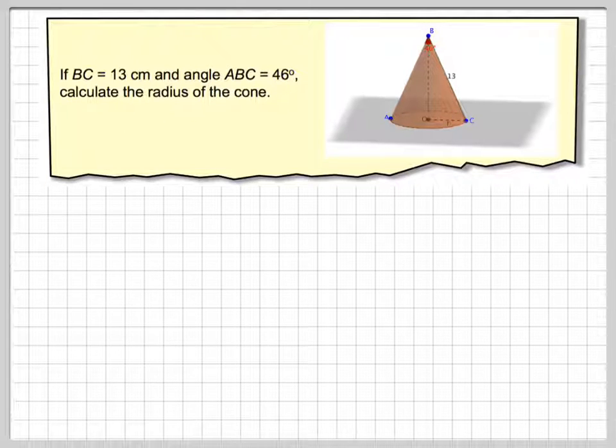So what we've got here is a cone. We're told that the length BC from B to C is 13 and that the angle ABC will be equal to 46 degrees. That's that angle at the top.